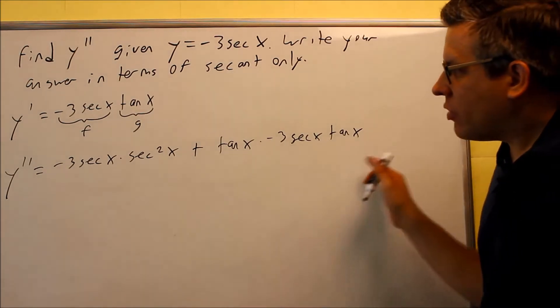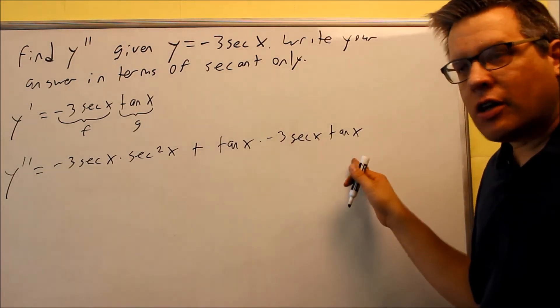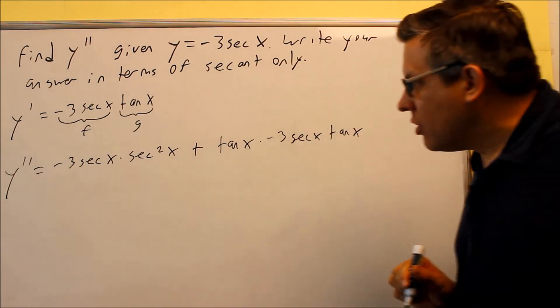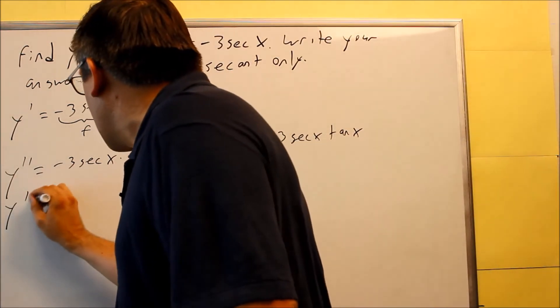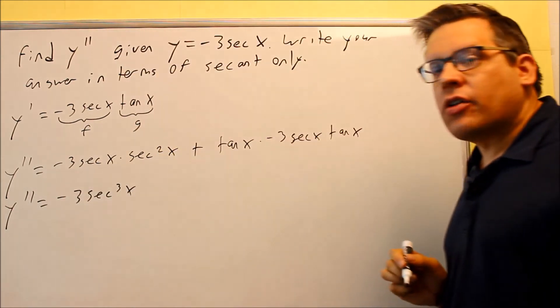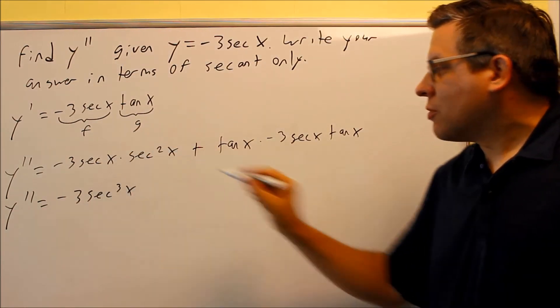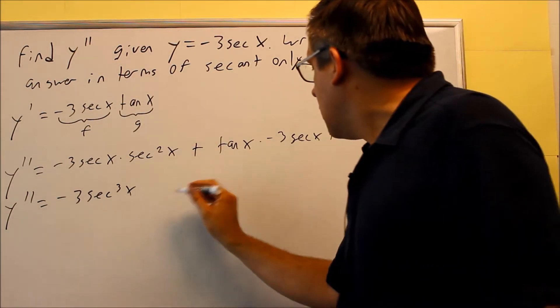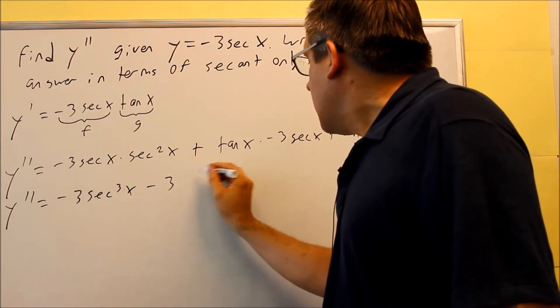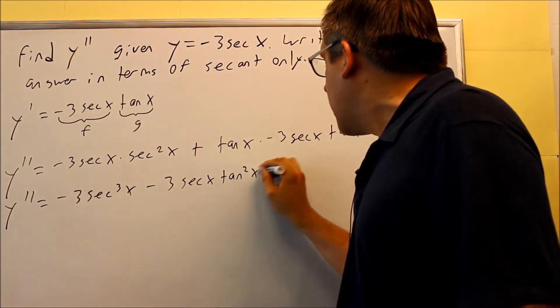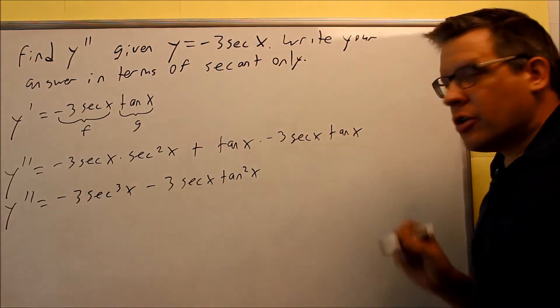Now that we have that complete, we have to do some simplifying. And we'll have to put in an identity also because they don't want tangent. They want everything in terms of secant only. So let's first do a simplifying step here. This is going to become negative 3 secant cubed because you're multiplying those and you're adding exponents. This one over here, you have a minus 3 secant x, and then you have tangent squared x on the end there when you multiply those.